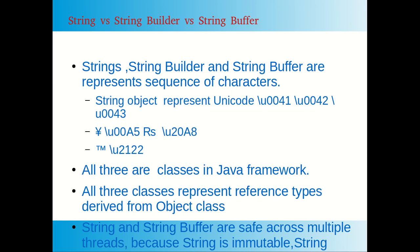For example, if you want to represent alphabets A, B, C in Unicode, you can write \u0041, \u0042, \u0043 — where 0041 represents 'a', 0042 represents 'B', and 0043 represents 'C'. For currency symbols like Japanese Yen use \u00A5, for Indian Rupee use \u20A8, and similarly for trademark symbols. Unicode characters form an international character set.